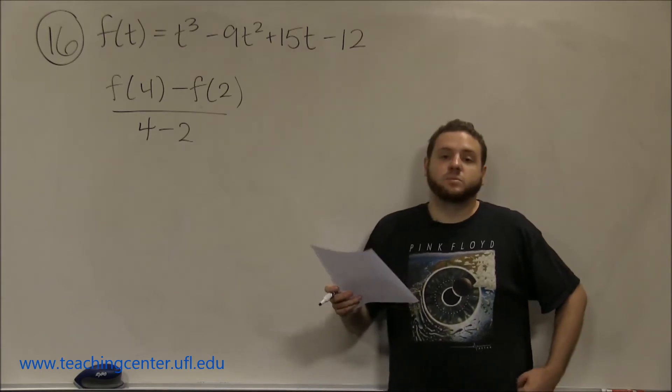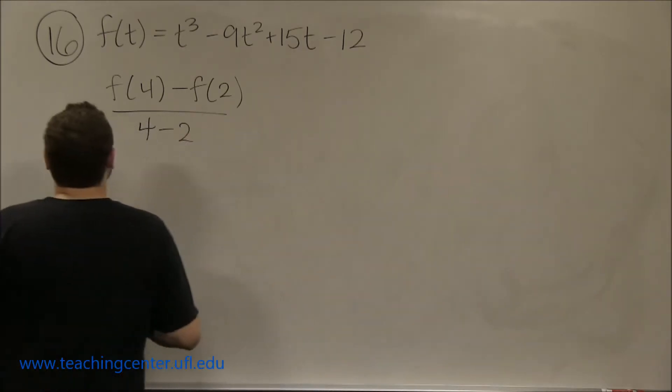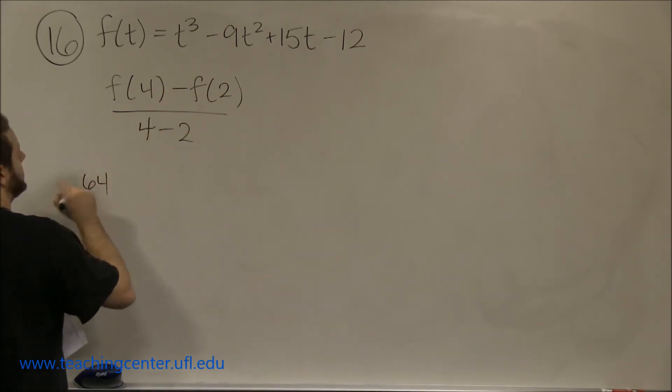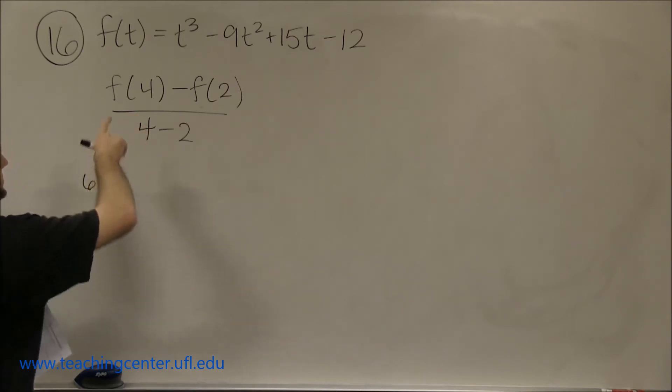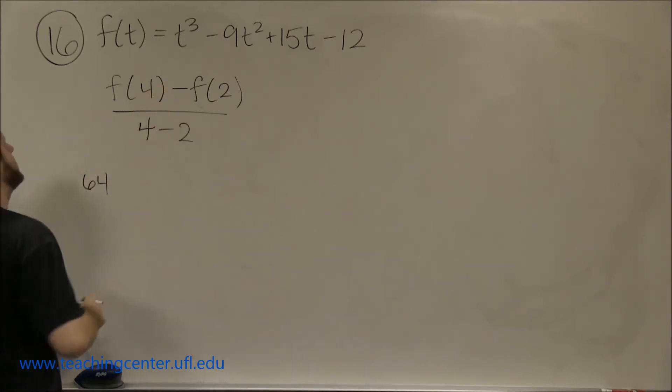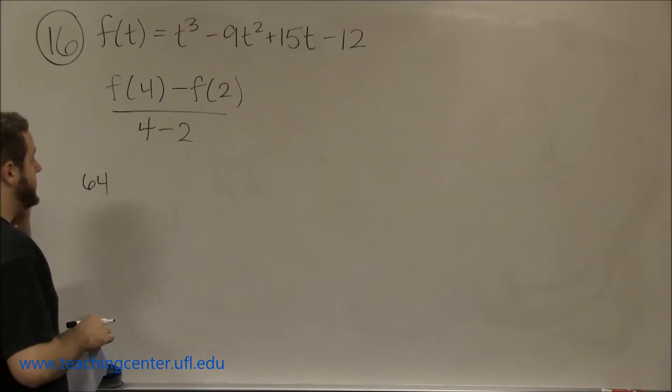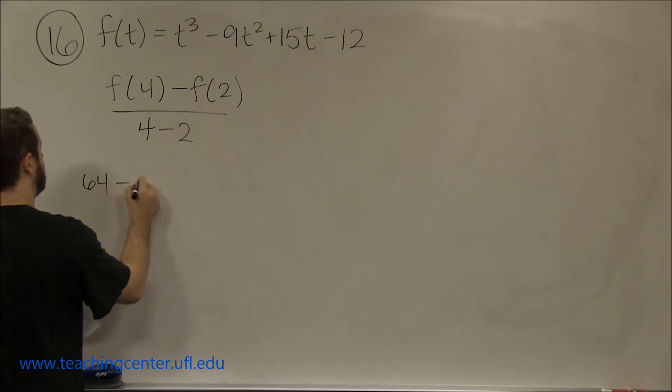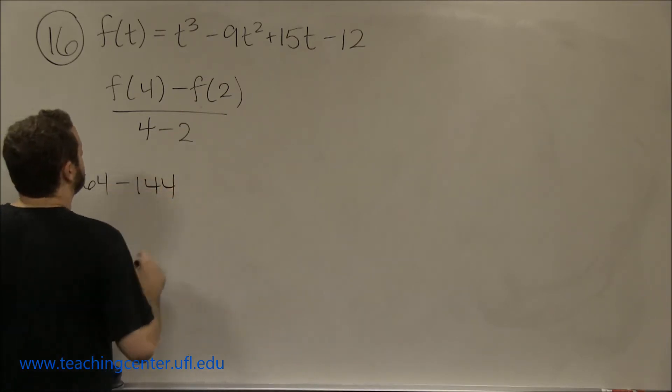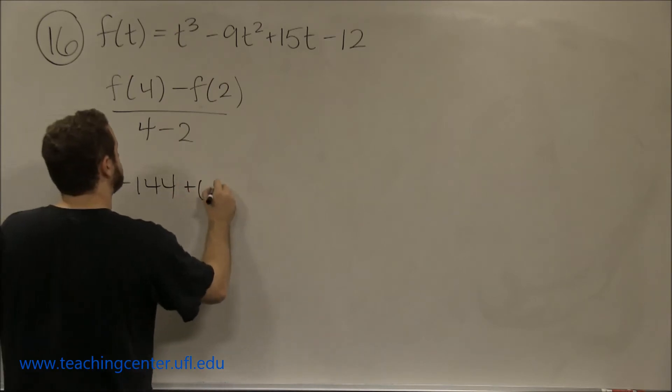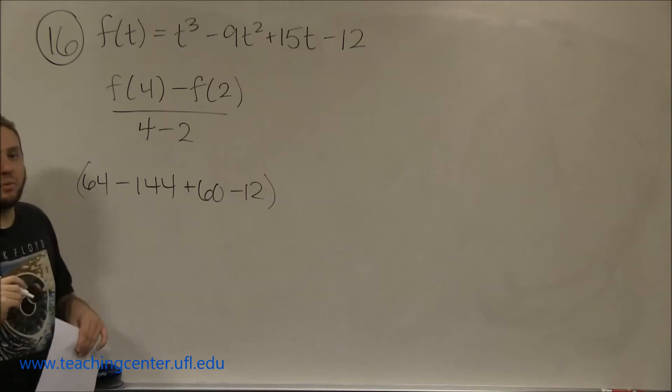What we need here is f(4) minus f(2) all over 4 minus 2. To solve this, we just need to plug in those values. If we plug in 4, we're going to get 64, 4 cubed, minus 9t² so 4² is 16, 9 times 16 is 144, plus 15t, 15 times 4 is plus 60, minus 12. So that's f(4).